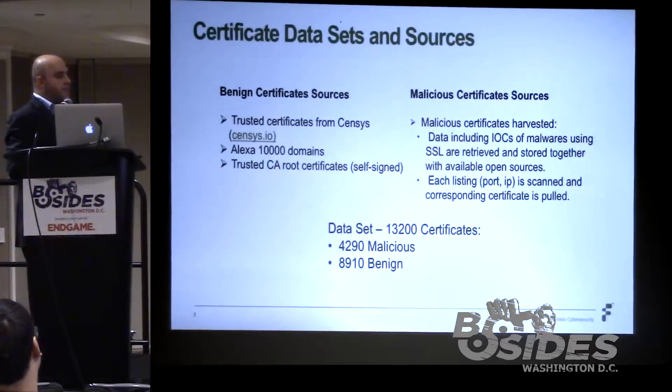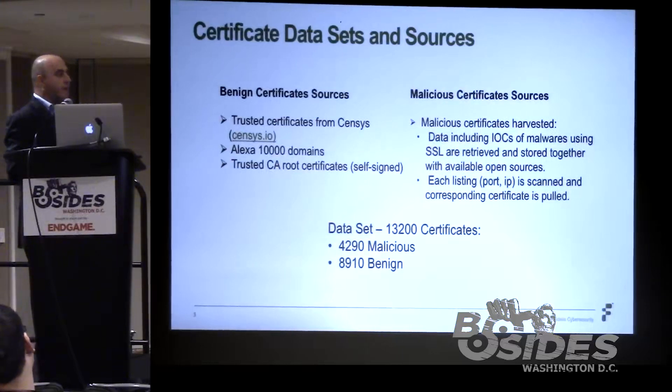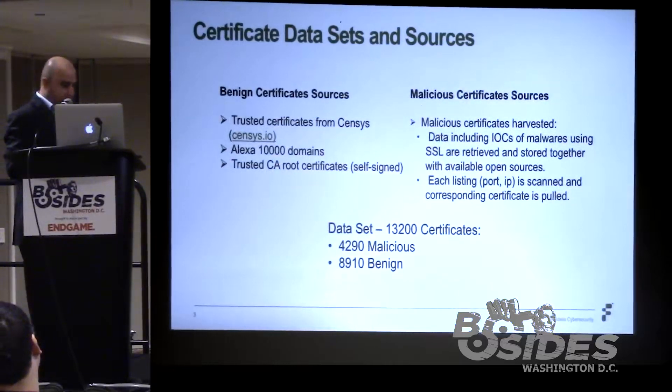We want to keep the dataset from being too imbalanced. We can collect millions of benign certificates, but that wouldn't be very helpful because we don't want the dataset to become too skewed.